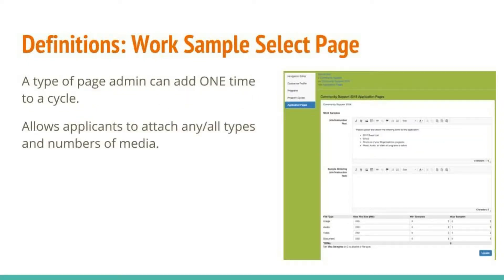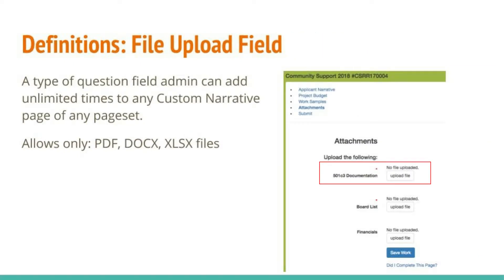We'll talk about Work Samples Select Pages. This is a type of page that you can add one time to a cycle, and it allows applicants to attach any or all types and numbers of media. Then we've got our File Upload field, which is a type of question field that you can add unlimited times to any custom narrative page of any page set. These allow for PDF, Docx, and XLSX files.